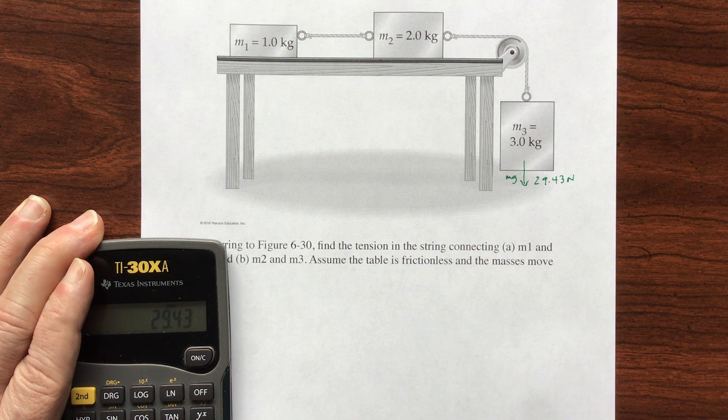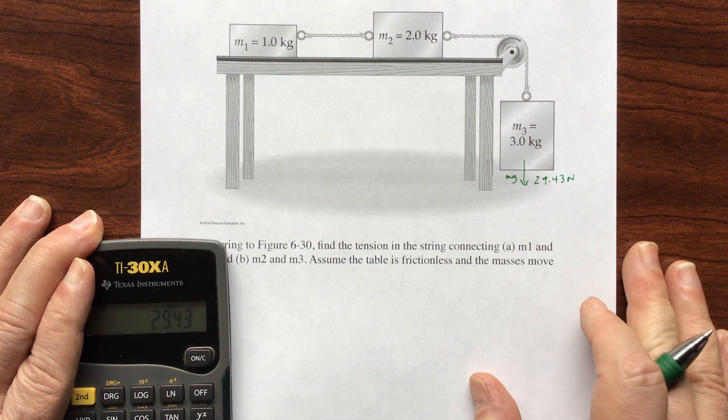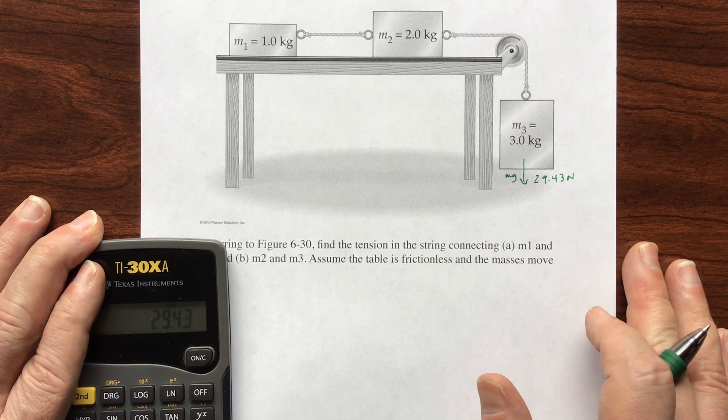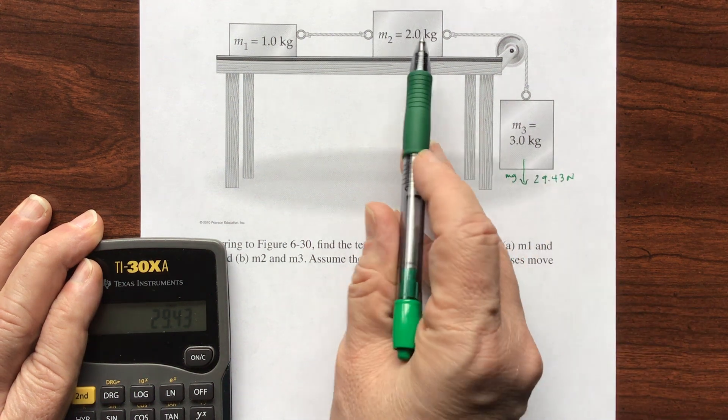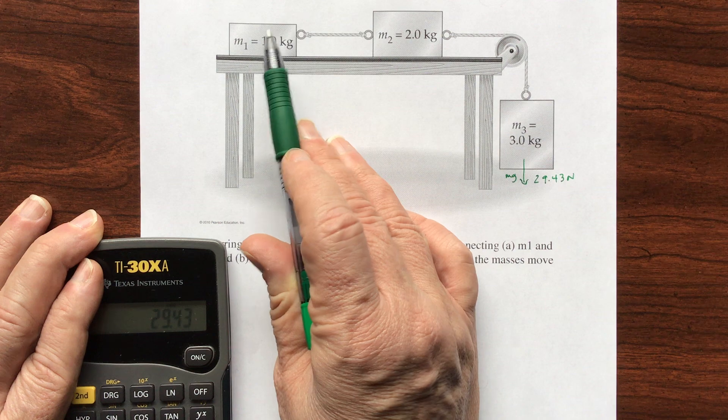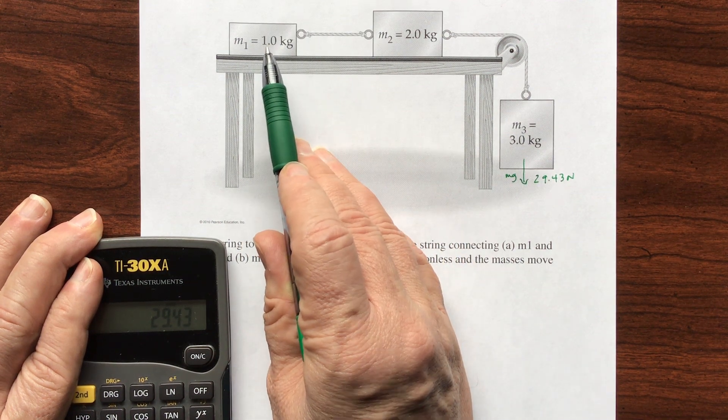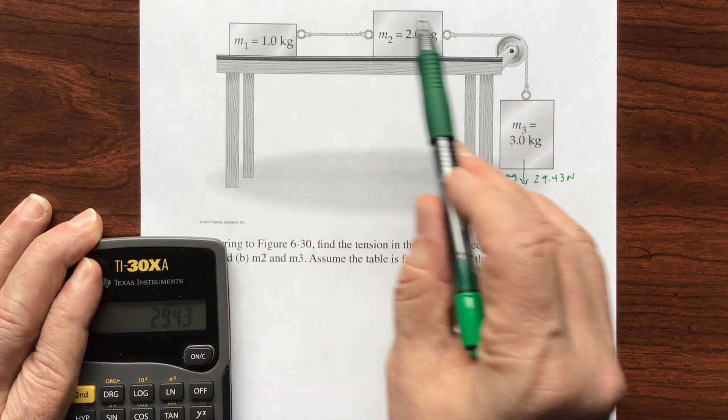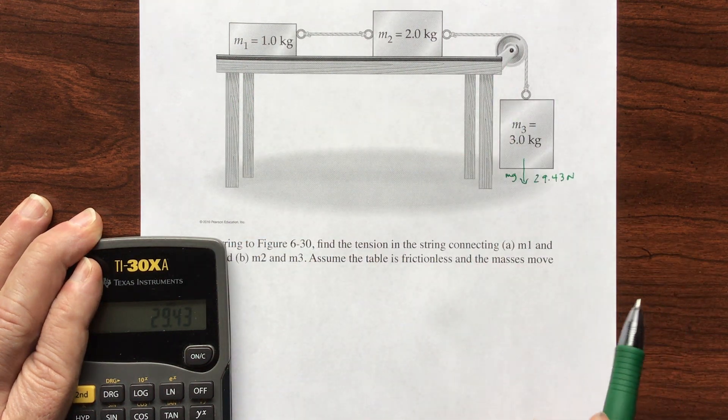All right, so if I've got 43 newtons pulling it all, let's find out what the acceleration is. If I could find out what the acceleration is and I know the mass, then the force here is the one pulling these two blocks and the force here is the one pulling this block. So the accelerations would be the same because they all move together. If this speeds up or whatever, they're all connected, they all move together.